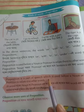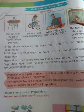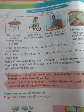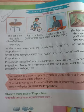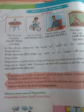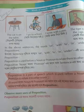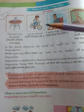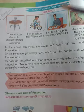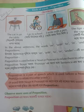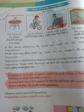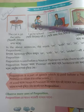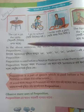তাহলে এটা হচ্ছে definition Preposition-এর। এখন আমরা বুঝব কোনো বাক্যের মধ্যে কোন word exactly Preposition কীভাবে বুঝব? এখানে একটা sentence দিয়েছে: 'The cat is on the table.' তাহলে কী বলছে — the cat মানে বিড়ালটি, is on the table, টেবিলের উপরে আছে। তাই তো, তো 'on' টা এখানে হচ্ছে Preposition — ওই যে উপরে বোঝাচ্ছে, বিড়ালটি কোথায় আছে — উপরে, on।